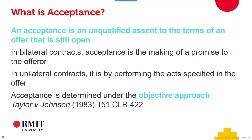In fact, technically, the offeror only ever has obligations because you are never obliged to accept a unilateral contract. Acceptance itself is determined using an objective approach, and Taylor v Johnson is the key case from an Australian point of view in relation to that point.